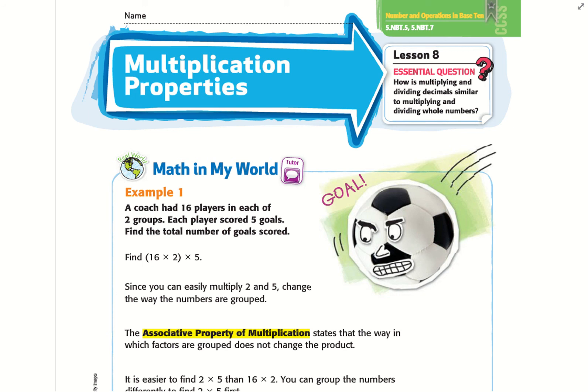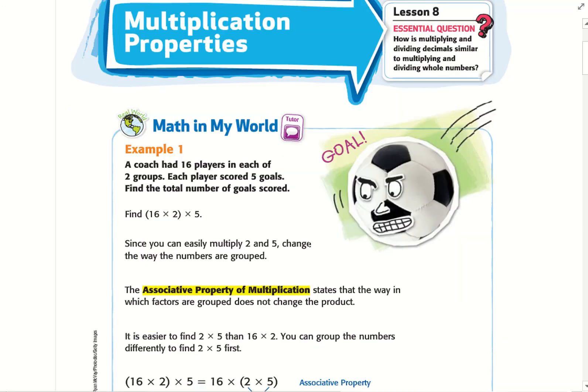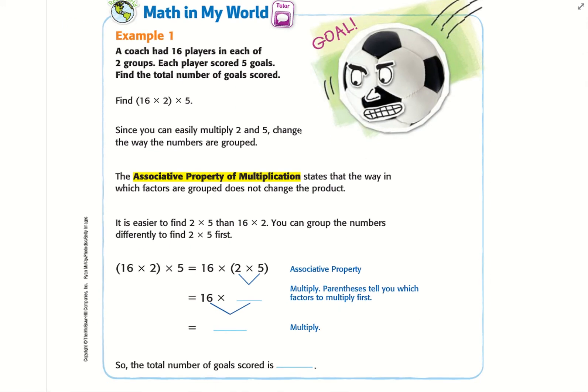Hello, welcome to Chapter 6, Lesson 8.1, page 423 on multiplication properties. We've done properties with addition, so now it's going to be very similar—same properties. Example 1: A coach has 16 players in each of two groups. Each player scored five goals. Find the total number of goals scored.